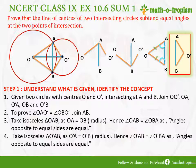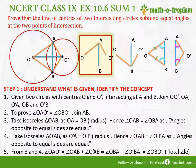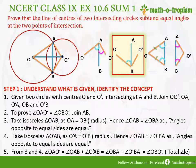Similarly, for the other isosceles triangle O'AB: O'A is equal to O'B, and therefore angle O'AB will be equal to angle O'BA.